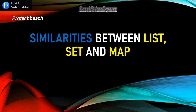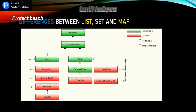First we need to understand how it is implemented and with which interface. In this diagram, you will be able to see that List and Set are interfaces that extend the Collection framework. Under the List we have few classes like ArrayList, LinkedList, and Vector. Similarly, List extends the Collection interface and SortedSet extends the Set interface.